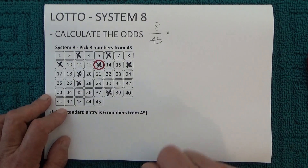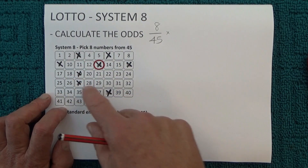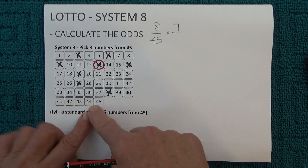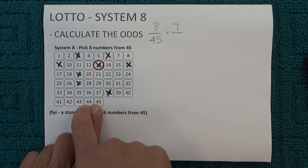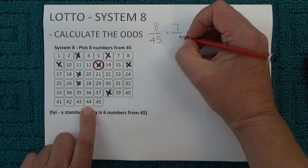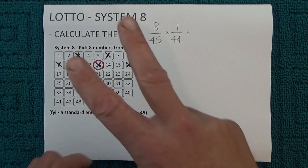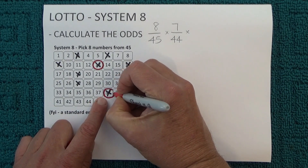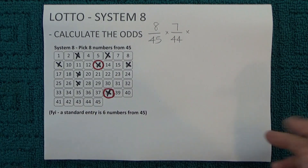Now when the second number's drawn, you have seven unmatched numbers, and now there are actually only 44 balls left in the barrel because one number has already come out. So you've got seven chances in 44 of matching the second number that's drawn. And to show that one of those numbers has actually been matched, I'll just randomly mark off one of those numbers.